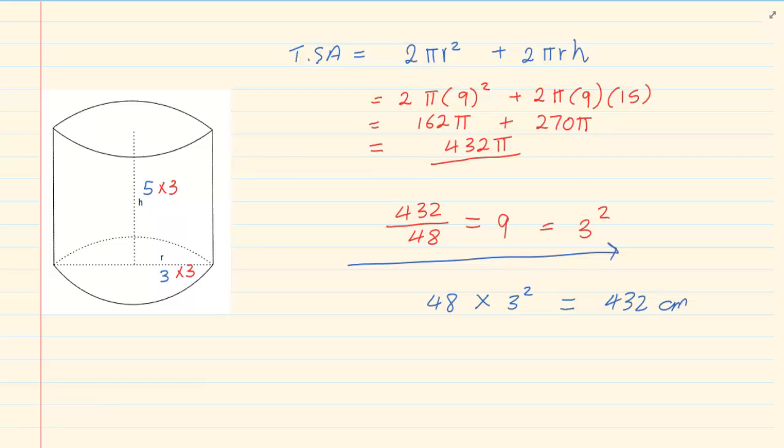Why 3 squared? Because we know we are working with area. And the adjustment was 3. So we have 48 times 3 squared, which would equal to 432 centimeters squared. Why square again? Because we are working with area. Thank you for watching.